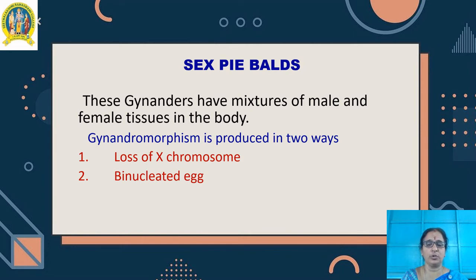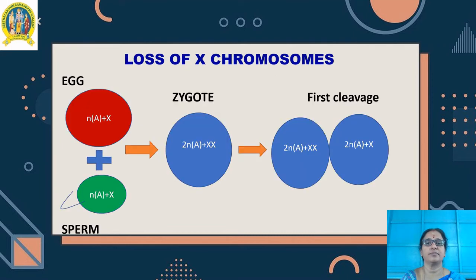Gynandromorphism is produced in two ways: number one is the loss of X chromosome, and number two is the binucleated egg condition.